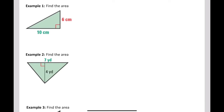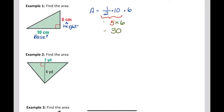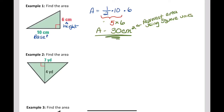This first example has a base of 10, and this right here represents the height of 6. The area of a triangle is one half times base, so times 10, times 6. One half times 10 is 5, and 5 times 6 is 30. Make sure whenever you write anything for area, it's always going to be square units. The area is 30 square centimeters — not 60. 60 would be the area of a parallelogram with the same base and height, like a 10 by 6 rectangle.